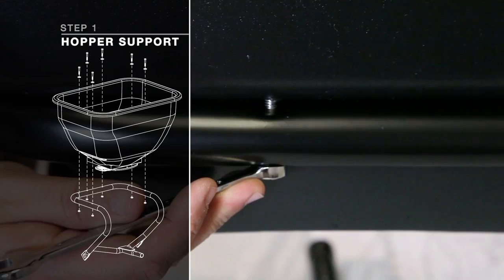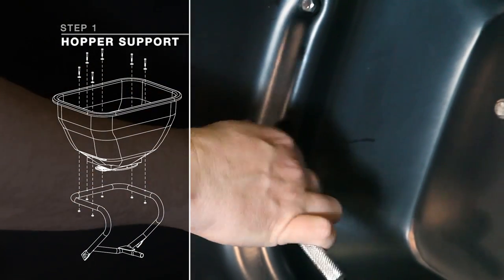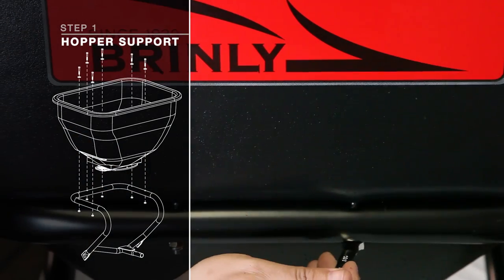Thrust washer number 3 through top of hopper and through support frame. Secure bottom of bolt with lock nut number 5. To avoid damage, do not over tighten.